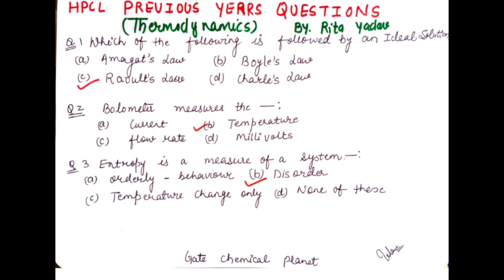Question number two: what quantity does a bolometer measure? The bolometer is used to measure temperature. So the correct option is B here.